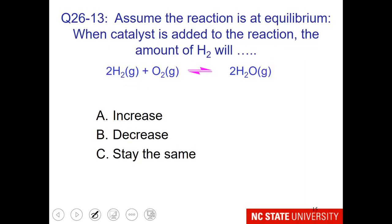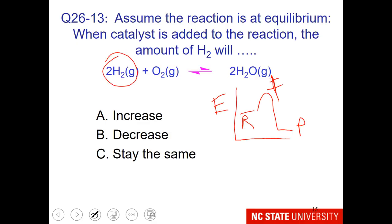Finally, we are at equilibrium and a catalyst is being added to the reaction. What will happen to the amount of H₂? I will remind you that a catalyst affects the transition state, but equilibrium amounts are impacted by the relative energies of the reactant and the product.